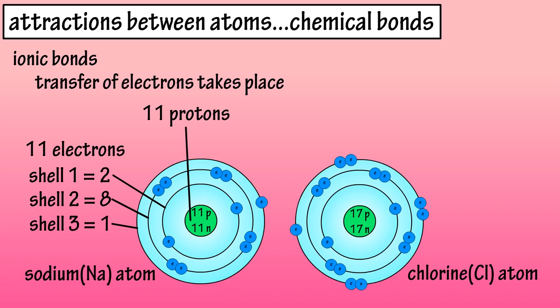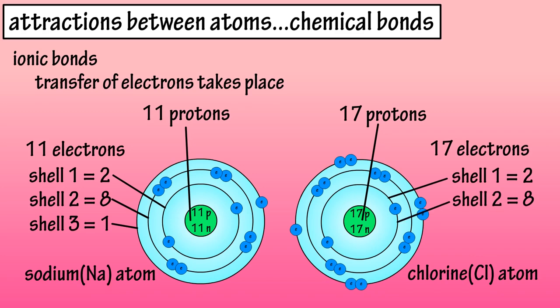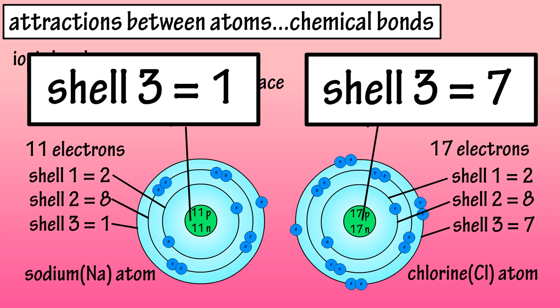And here we have a chlorine atom, which has an atomic number of 17. So, 17 protons and 17 electrons. It has two electrons in shell 1, 8 in shell 2, and 7 in shell 3. We know that atoms want to have eight electrons in their outer shell.